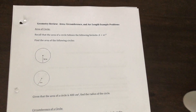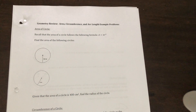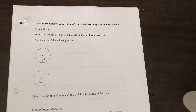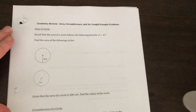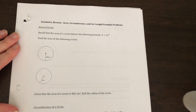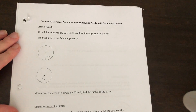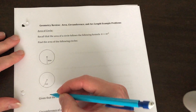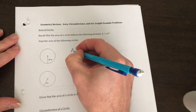Okay guys, so this is going to be a quick review over some things dealing with circles. Some of this you've seen before since like 6th, 7th, 8th grade, and some of it is going to be a little bit new to you. The first thing we're going to start by doing is finding the area of a circle. The area of a circle is pi r squared. So in these examples, we're going to find the area of the circle.